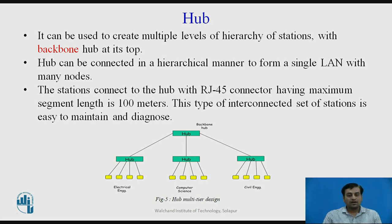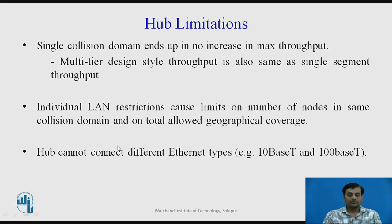Stations are connected to the hub with an RJ45 connector with a maximum segment length of 100 meters. This type of interconnected set of stations is easy to maintain and diagnose. Limitations include a single collision domain, which results in no increase in maximum throughput — even with a multi-tier design, throughput remains the same as a single segment. Individual LAN restrictions can also limit the number of nodes in the same collision domain and total allowed geographical coverage.